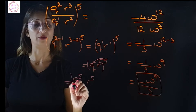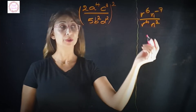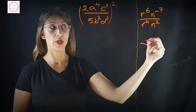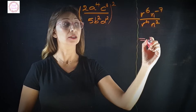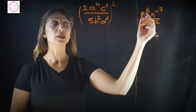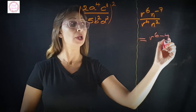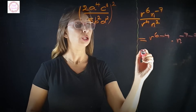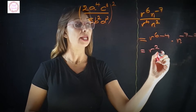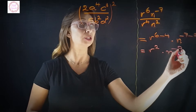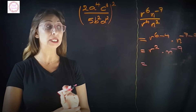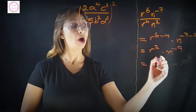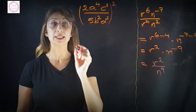Another example: r power 6 times n power negative 7 over r power 4 times n squared. We simplify the r's together and the n's together. For r: 6 minus 4 gives r power 2. For n: negative 7 minus 2 gives n power negative 9. Since we do not want negative exponents in the final answer, we flip n upside down, giving us r squared over n power 9.